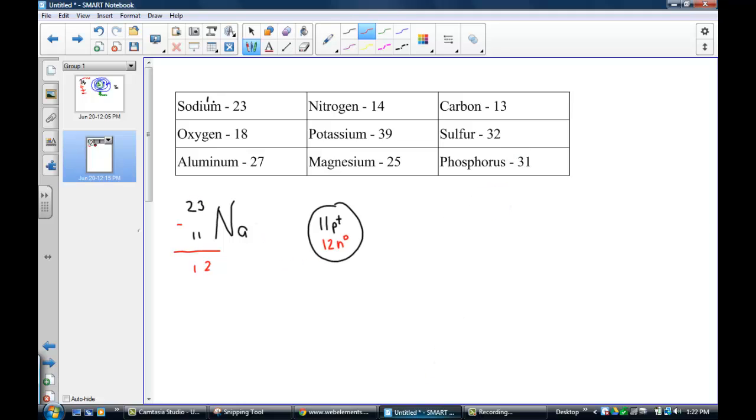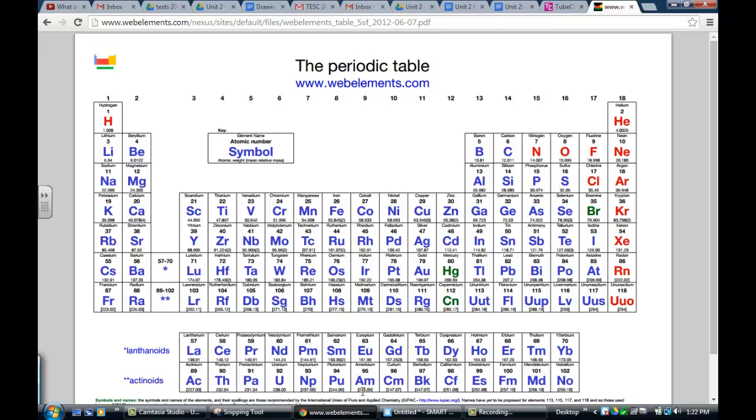The periodic table also gives us great information about how many electron shells, called orbitals or energy levels, and how many electrons in the outermost energy level. Notice that 1, 2, 3, 3rd period down, we find sodium. I know that we'll have three energy levels. And that sodium is found in the first family, and that therefore we'll have one valence electron in that outermost energy level.